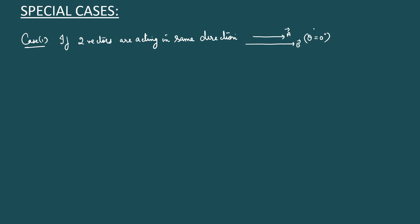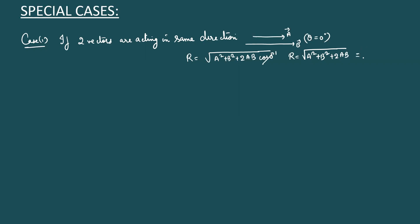What is the resultant formula? We have already derived the relation R = √(A² + B² + 2AB·cosθ), where θ is the angle between the two vectors. Here θ is zero degrees, and cos0° = 1. So the resultant becomes √(A² + B² + 2AB), which is in the form (A+B)², and since square and square root cancel, the resultant is A + B.